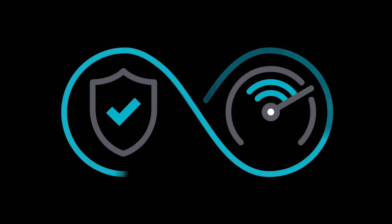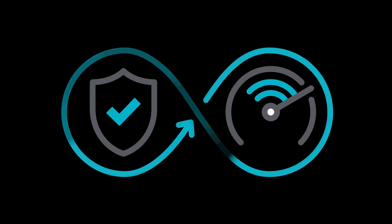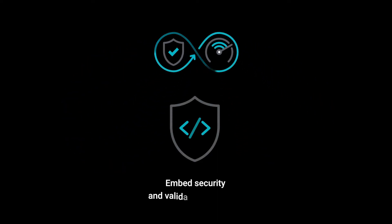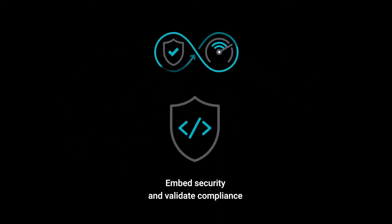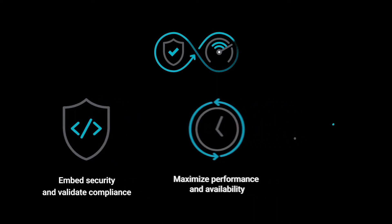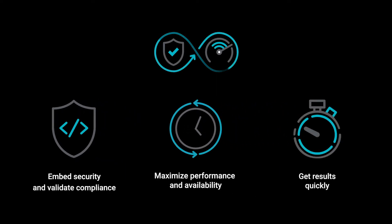Secure DevOps is about bringing security and monitoring together throughout the application lifecycle, from development through production. It embeds security and compliance, maximizes performance and availability, and manages security risk so you can confidently run in production.